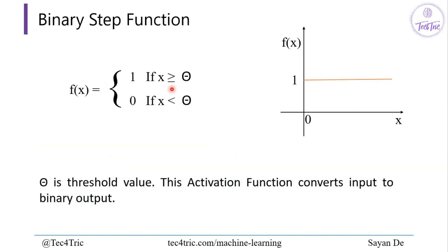Next we have the binary step function. By the name 'binary' we know it contains 1 and 0. If x is greater than theta (theta again being the fixed threshold value), it will produce 1; otherwise it will produce 0. The activation function converts the input to a binary output of 1 or 0.